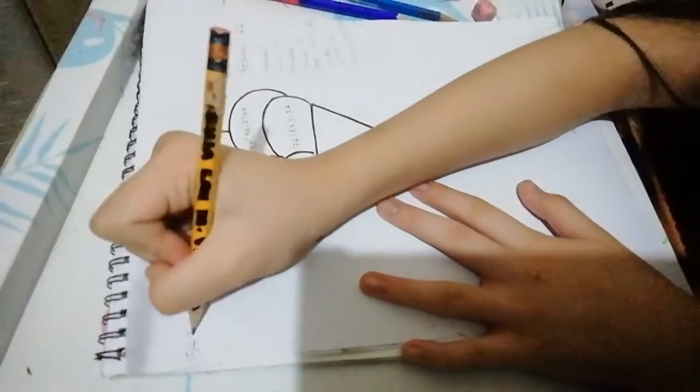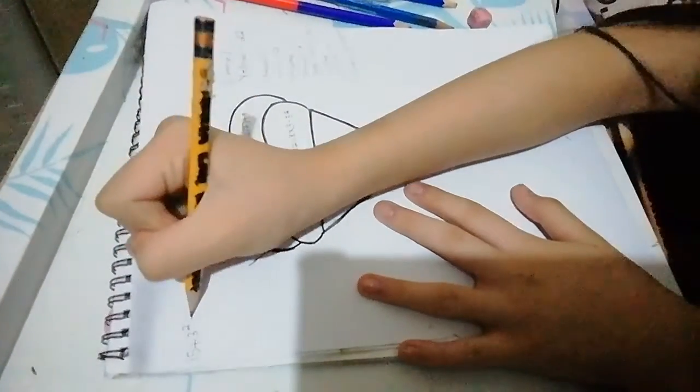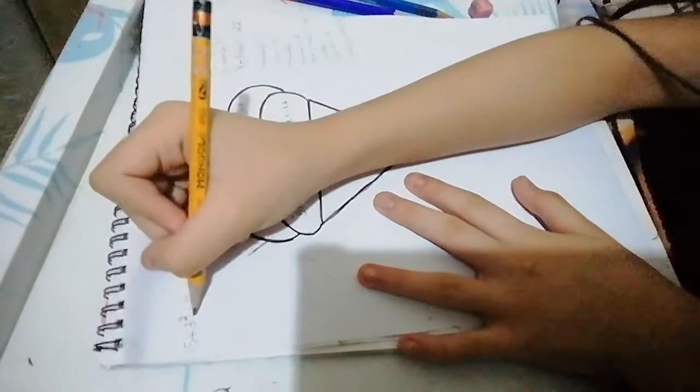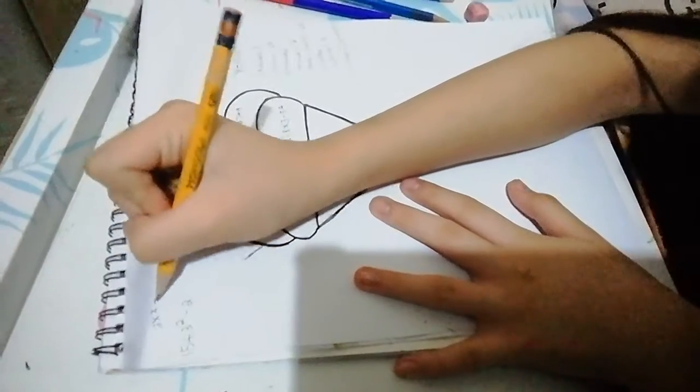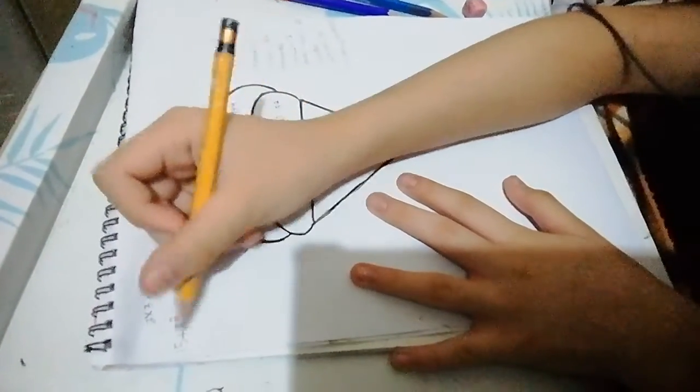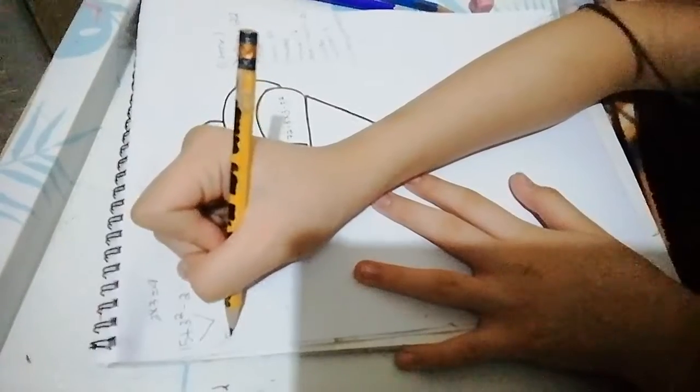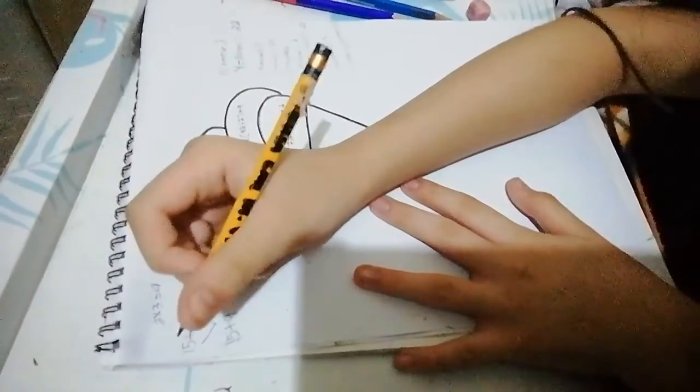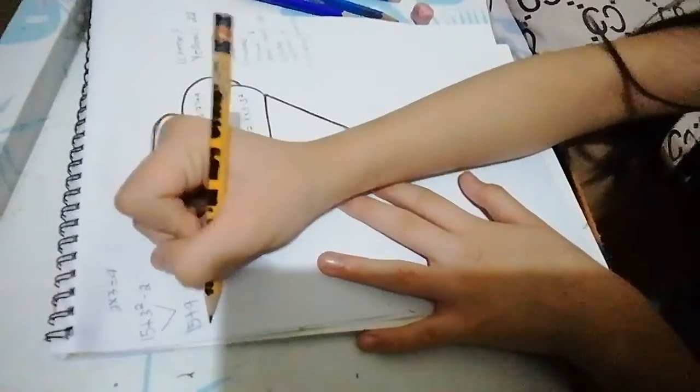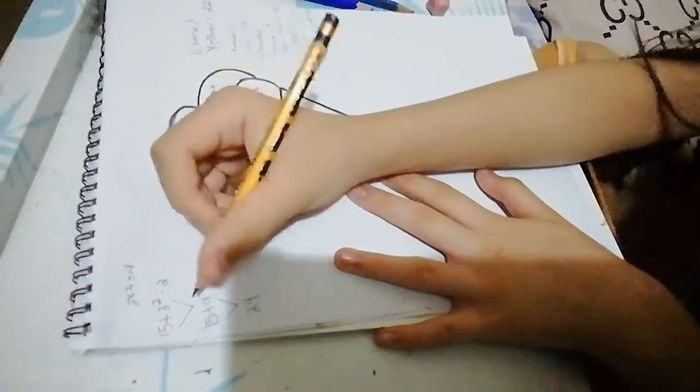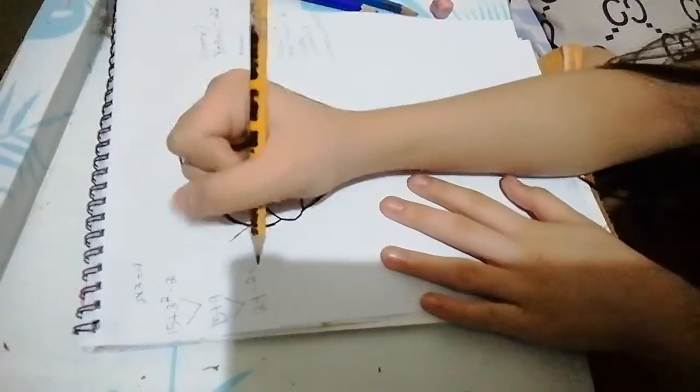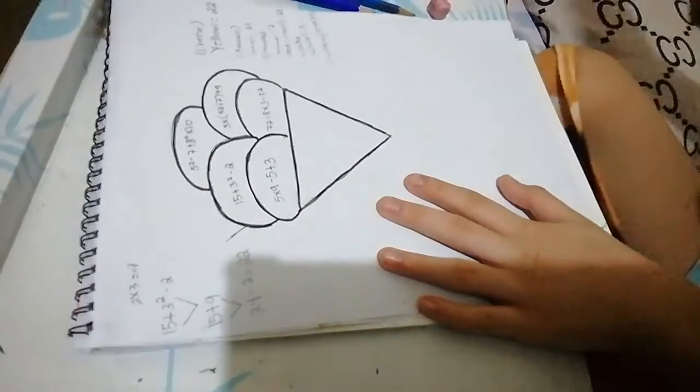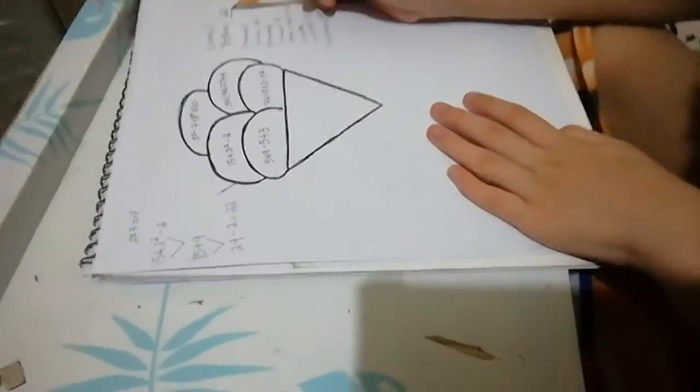15 plus 3 to the second power minus 2. So, 3 to the second power is 3 times 3 equals 9. 15 plus 9 is 24. 24 minus 2 equals 22. So 22 is yellow.